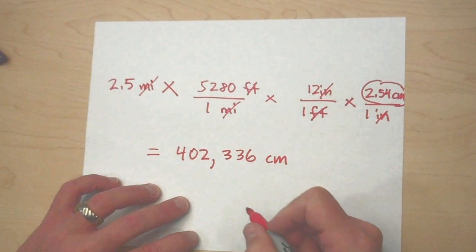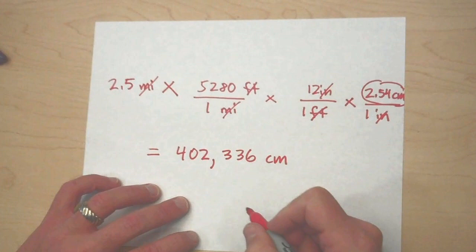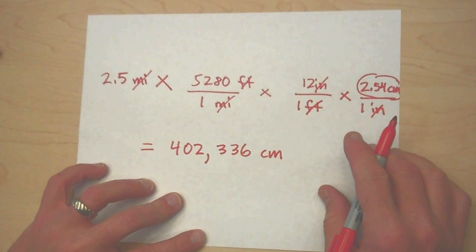And that's the unit that we're after. So the answer is, once we have multiplied everything out, 402,336 centimeters. Now that's our first look at dimensional analysis. But let's turn this into problems about the mole.